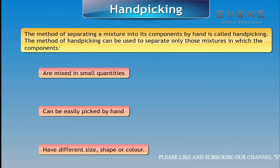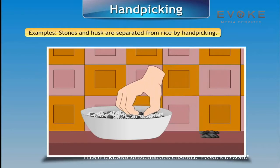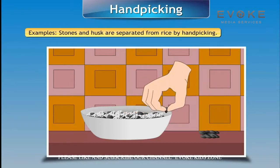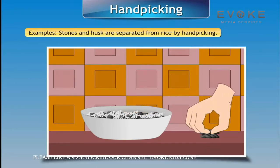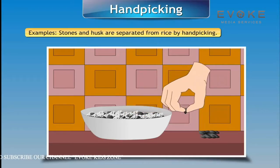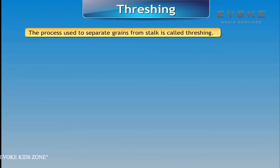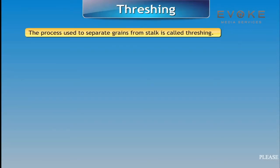For example, stones and husk are separated from rice by hand-picking. Threshing: The process used to separate grains from stalks is called threshing.